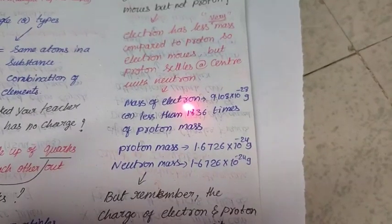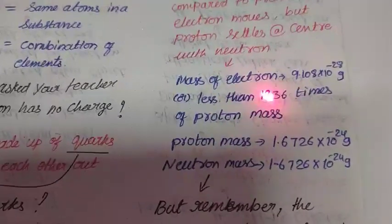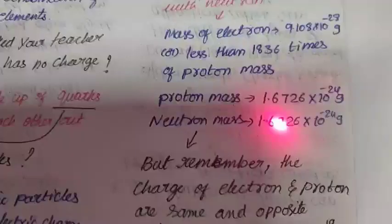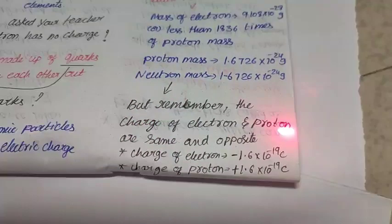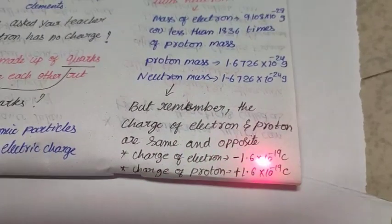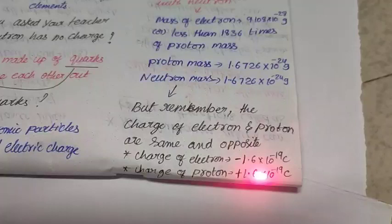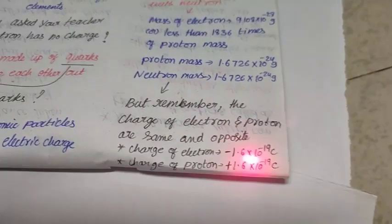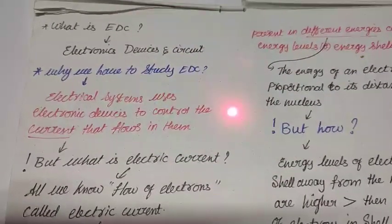So these two particles sit at the center, while having less mass, electron is free to move. Having less mass means having less weight, so less weighted persons can run first when compared to heavy persons. In this way, but remember, the charge of electron and proton are same and opposite. Charge of electron is -1.6 x 10^-19 coulombs. Charge of proton is +1.6 x 10^-19 coulombs. These are same but having opposite charges.